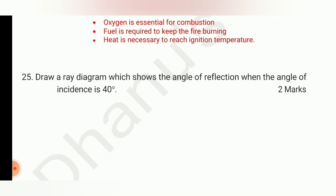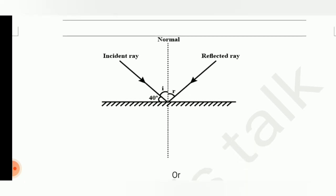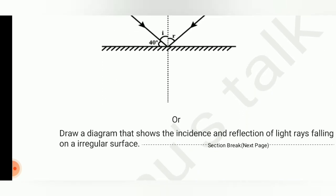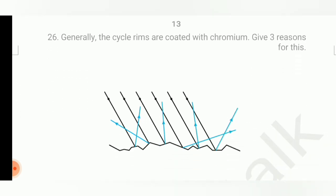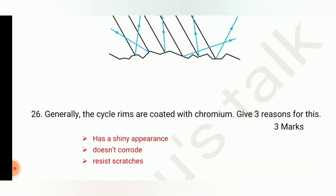In the two-marks section, the last question is: draw a ray diagram which shows the angle of reflection when the angle of incidence is 40 degrees. For the option: draw a diagram showing the incidence and reflection of light rays falling on an irregular surface. In the two-marks question you will get one diagram from the light chapter.